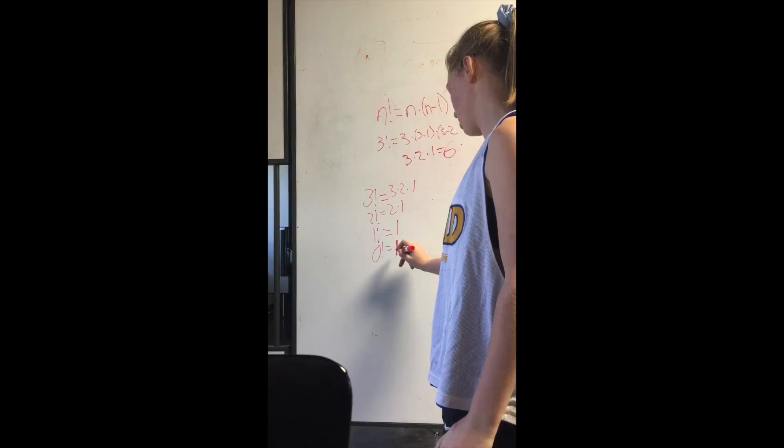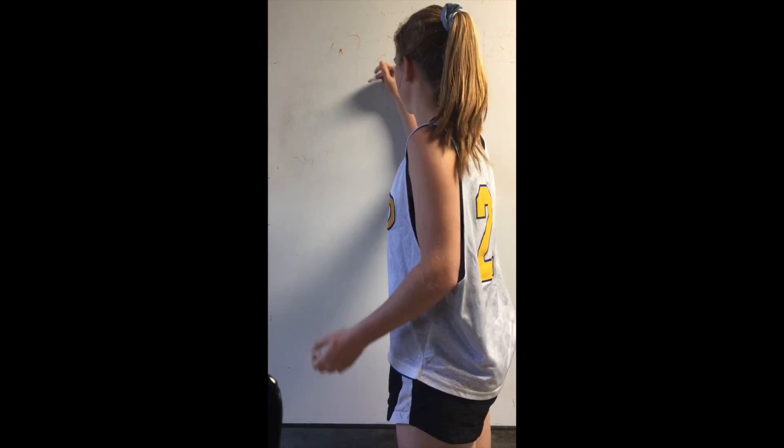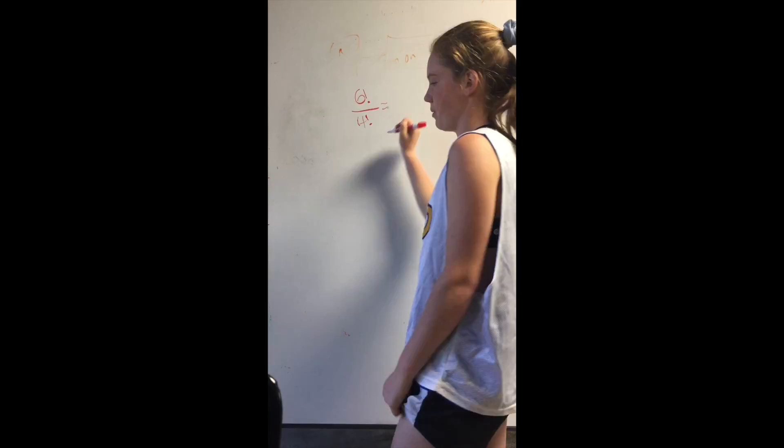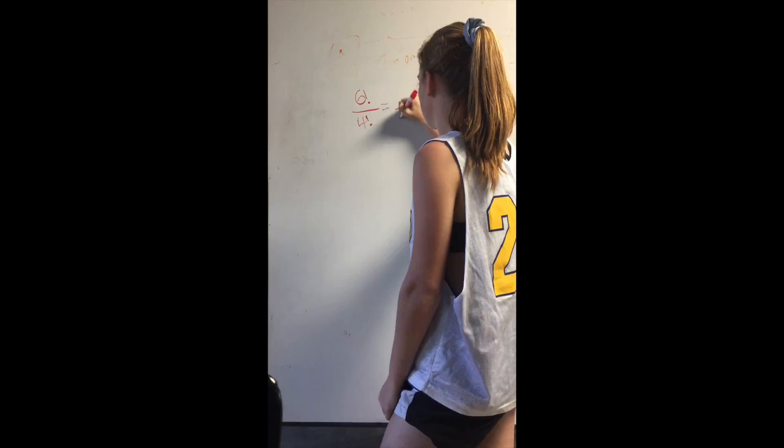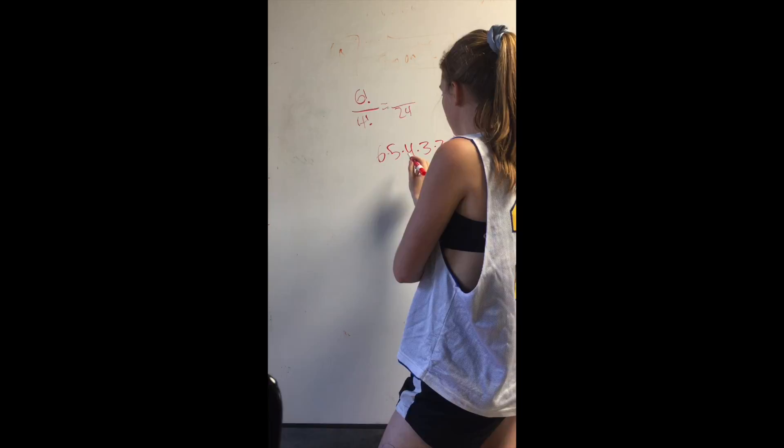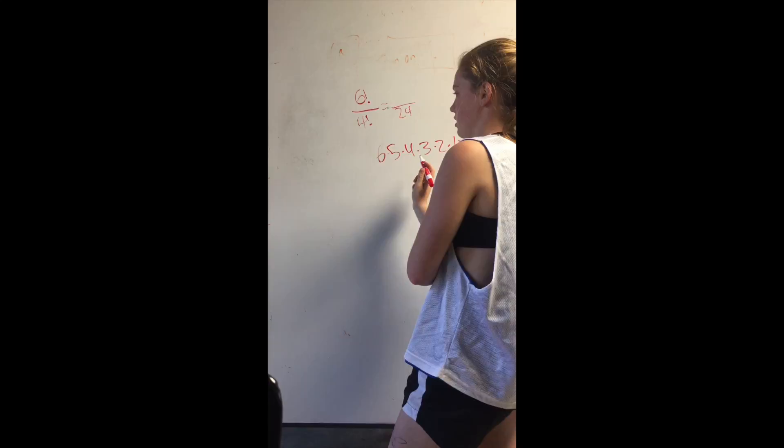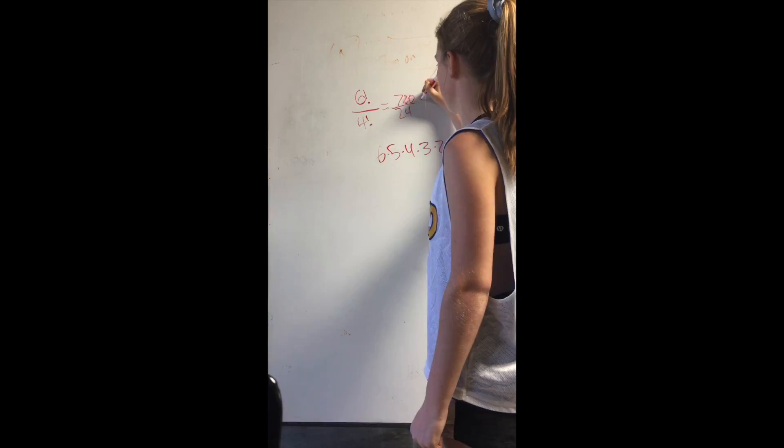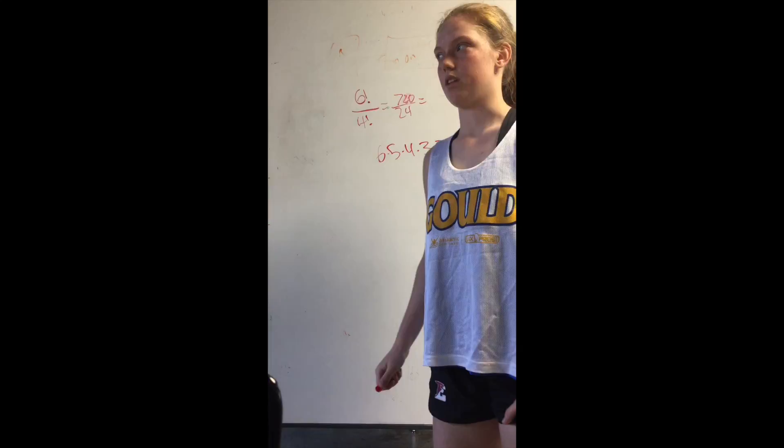If we want to solve more complex factorial problems, like we had factorial 6 over factorial 4. Factorial 4 equals 24, because 4 times 3 is 12, times 2 is 24, times 1 is still 24. Factorial 6 would be 6 times 5 times 4 times 3 times 2 times 1, which would be 720. So we could do 720 divided by 24, which would be 30.